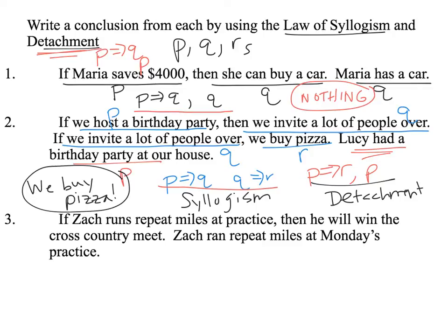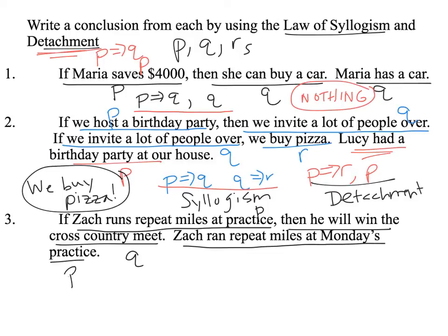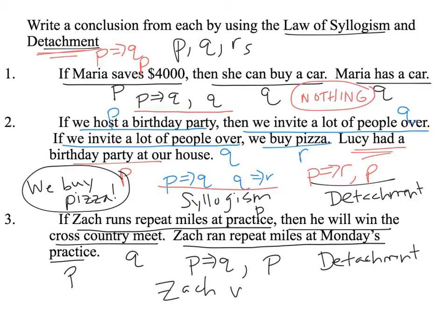Next: if Zach runs repeat miles at practice (P), then he will win the cross-country meet (Q). Zach ran repeat miles at Monday's practice — that's P. We're given P implies Q is true, and P is true, so this is the law of detachment. The conclusion is: Zach won, or will win, the cross-country meet.